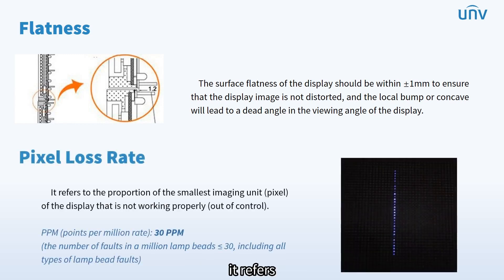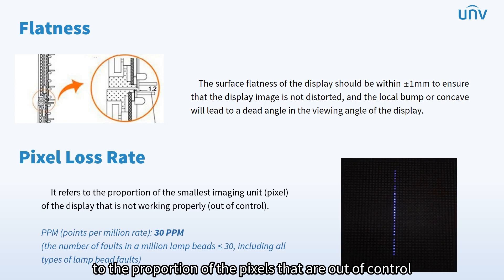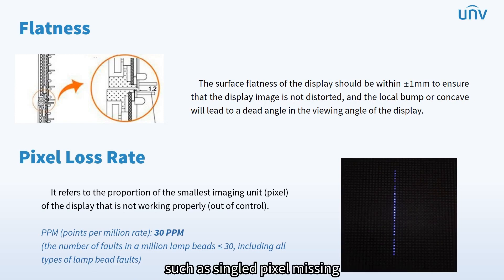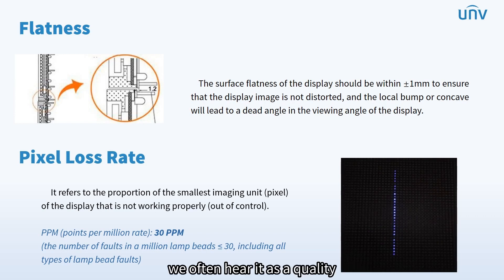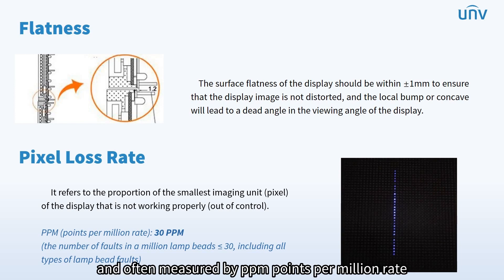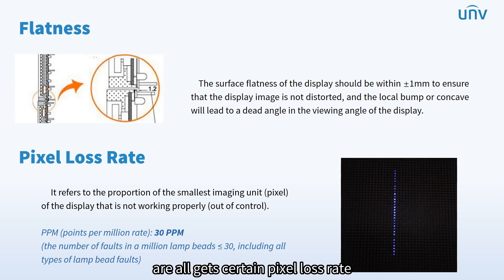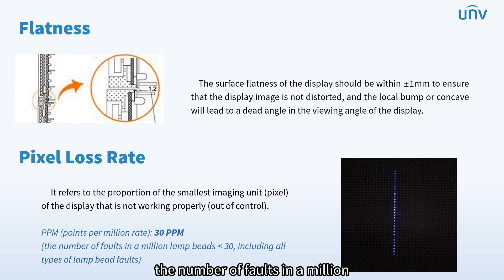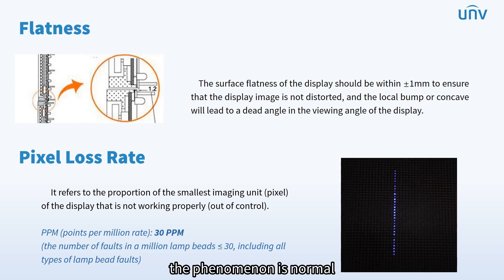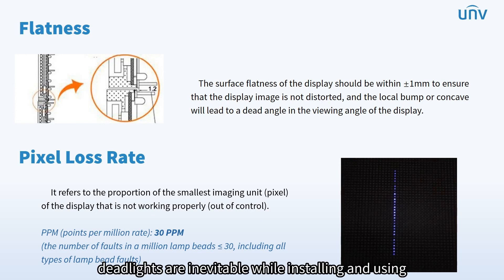For pixel loss rate, it refers to the proportion of the pixels that are out of control, such as single pixel missing, darkening, or twinkling, for a static screen. We often hear it as a quality standard in the LED industry, and it is often measured by ppm (points per million) rate. Both fine pixel pitch LED display and regular LED display have a certain pixel loss rate. Basically, when LED is out of factory, the number of faults in a million beads is less than 30, including all types of bead faults — this is considered normal. More lamp beads going dead are inevitable while installing and using.